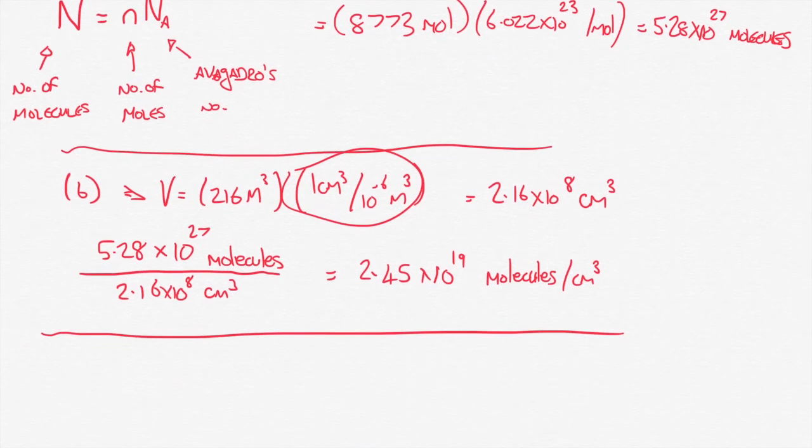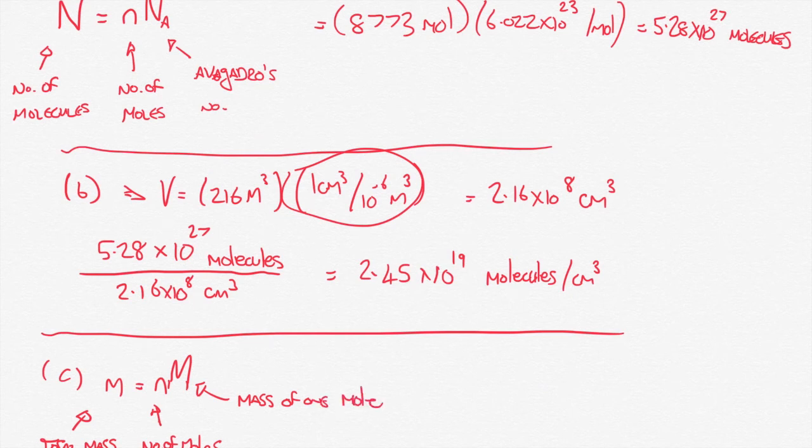And the last part of this question then is to calculate the total mass of the air in the room. So we've got the number of molecules per centimetre cubed now. We want to figure out what's the mass of the air in the room. So again, another awkward equation here. So we've got m equals n times M. So small m in this case is going to be the total mass of the air in the room. n is going to be the number of moles in the room. And then big M is the molar mass of nitrogen or the mass of one mole of nitrogen.